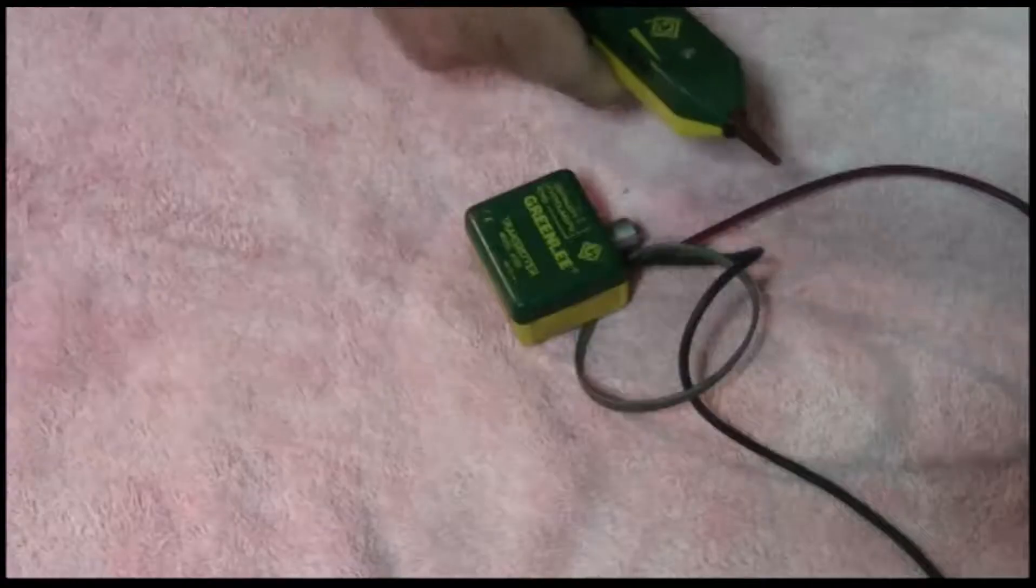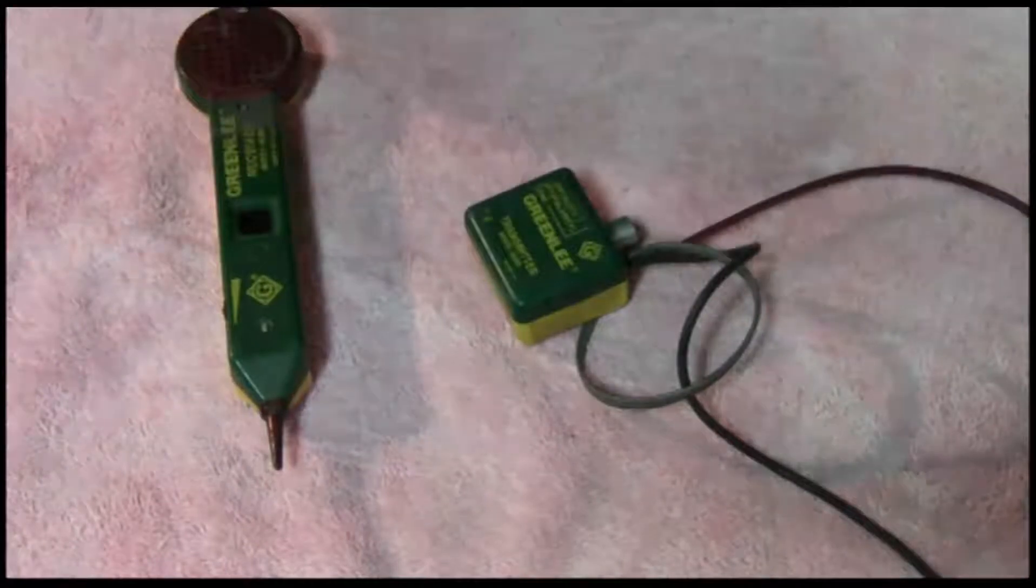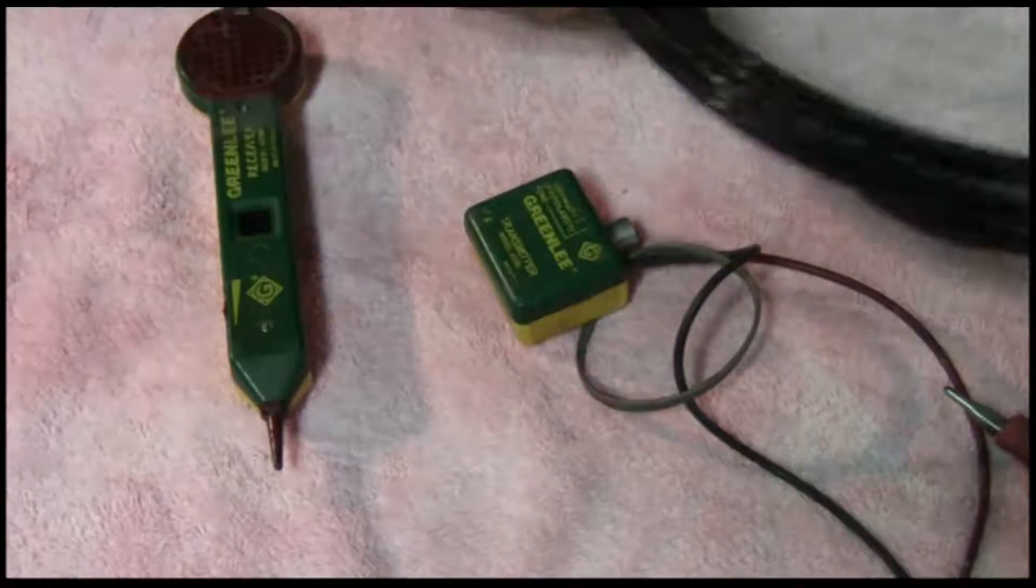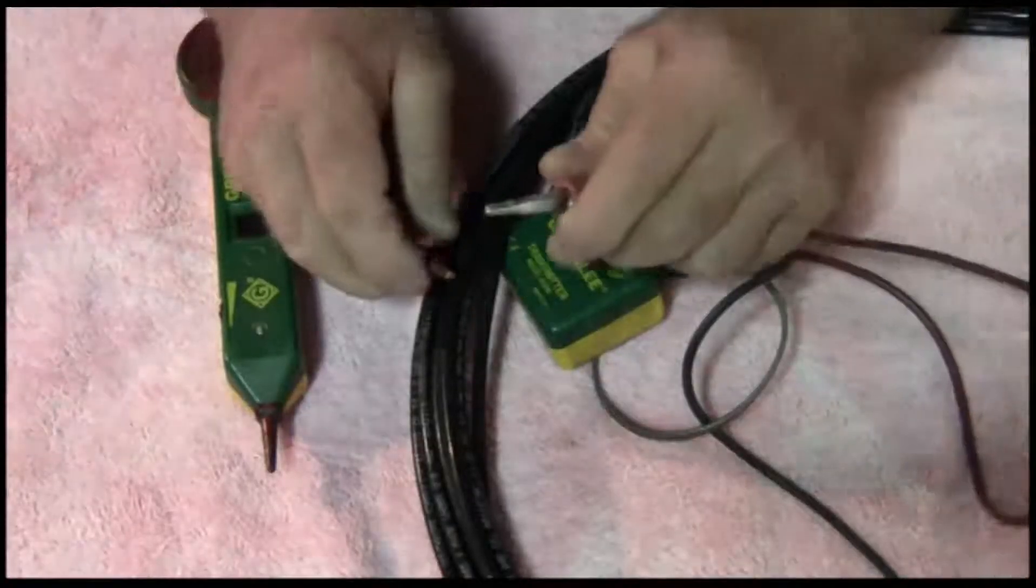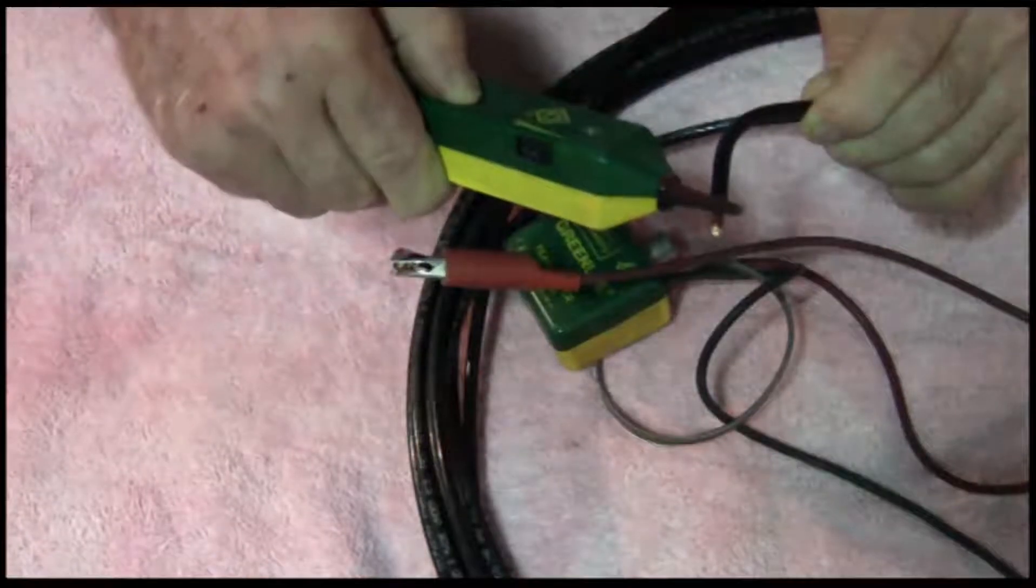When you turn it on it detects that tone, and it will detect through as much as three quarters of an inch of drywall. It will even detect through stucco. The way that it's used is you attach one end, you have a good signal there and you have a good signal there.